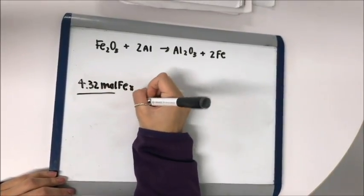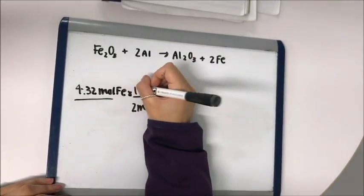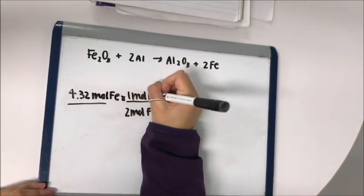You start off with 4.32 moles of Fe and multiply by 1 mole of Fe2O3 divided by 2 moles of Fe.